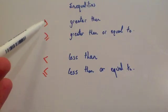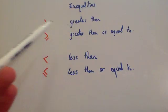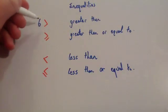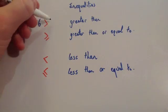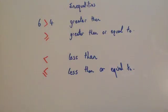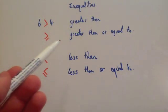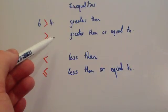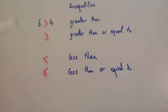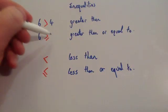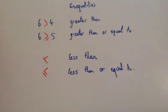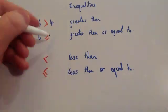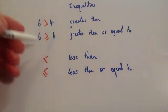The first one means greater than — so for instance you could write 6 is greater than 4. The next one means greater than or equal to, so this number is going to be bigger than or equal to this number. You could have 6 is bigger than or equal to 5, or even 6 is bigger than or equal to 6, because of the equal to part.